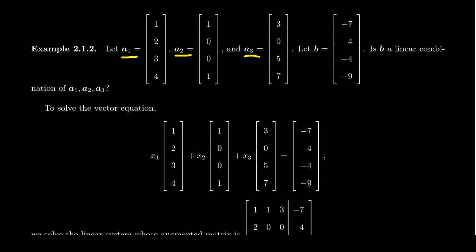While it's easy to create linear combinations of a1, a2, a3, just pick your three favorite numbers to use as scalars, what we need to determine is if we have a specific vector in mind, b, which in this case would be negative 7, 4, negative 4, negative 9, is b a combination of these three vectors.